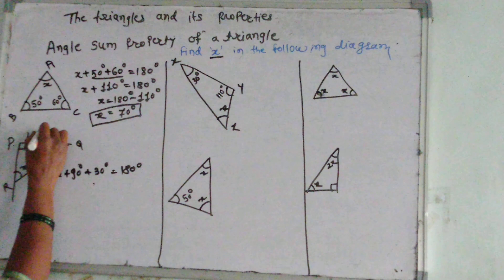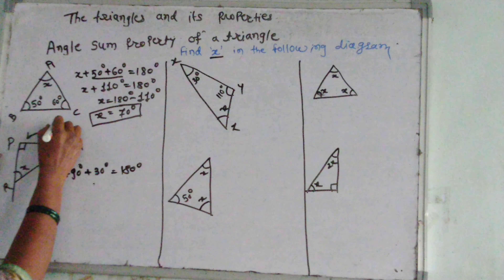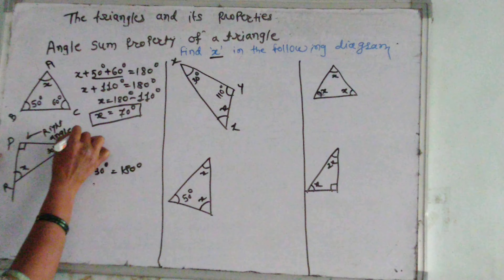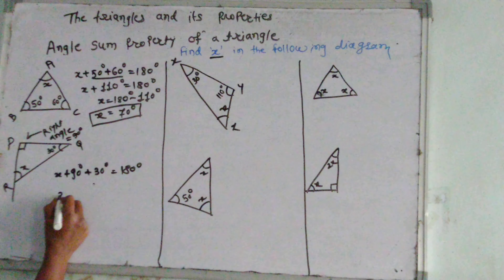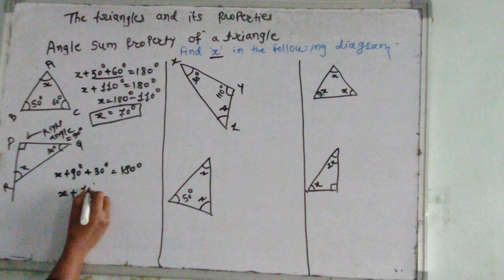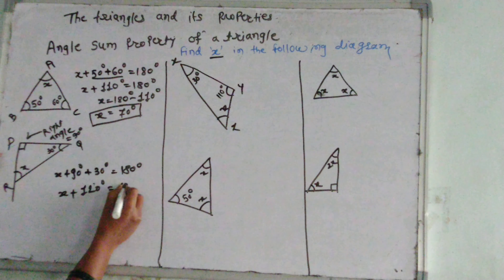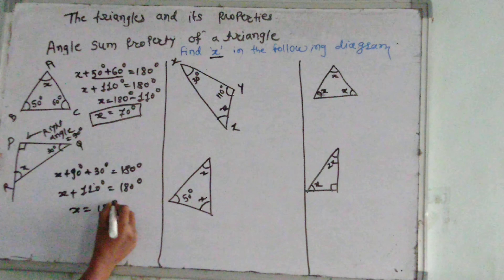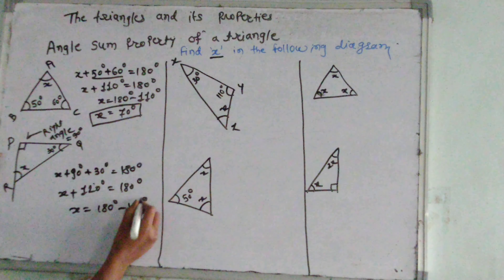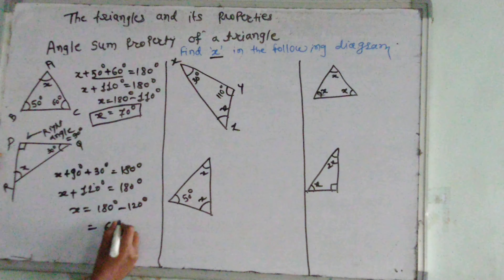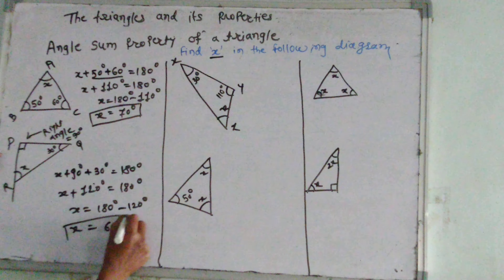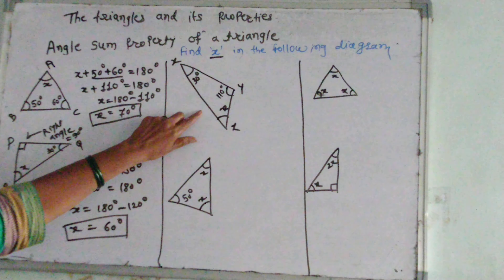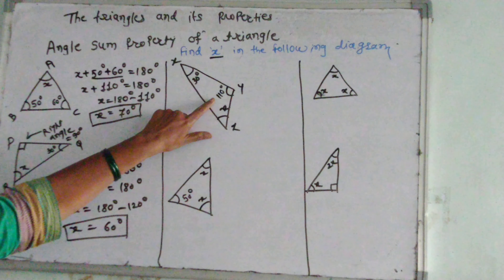The angle sum property states that the sum of angles in a triangle is equal to 180 degrees. X plus 50 plus 60 equal to 180 degrees. X plus 110 — the addition of these two — equals 180. X equals 180 minus 110, equal to 70 degrees.